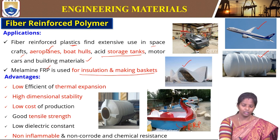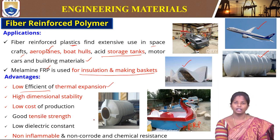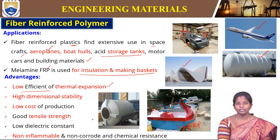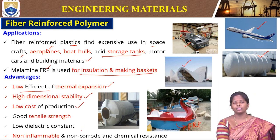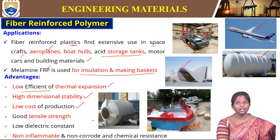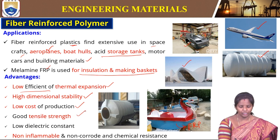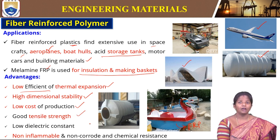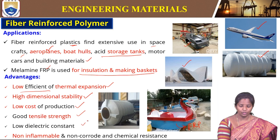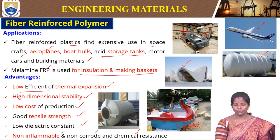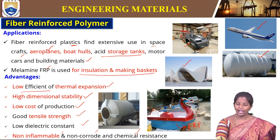The advantages of FRP include low coefficient of thermal expansion — even if exposed to heat or sunlight, thermal expansion is lower. High dimensional stability, low cost of production compared to metals, wood, or concrete; good tensile strength comparable to conventional materials; and low dielectric constant, non-flammable, non-corroded, and chemically resistant. These are good properties which help in different applications.